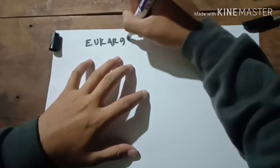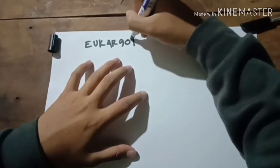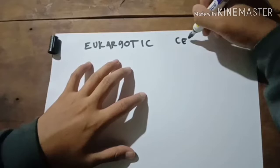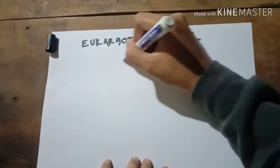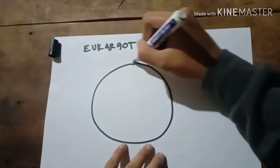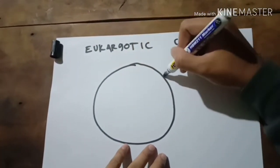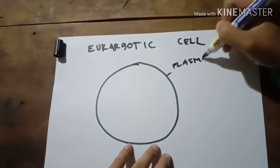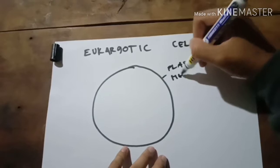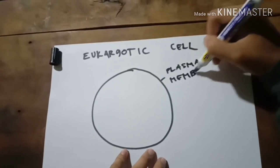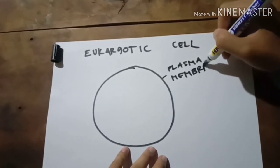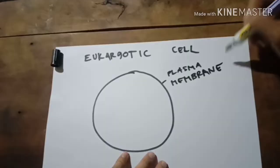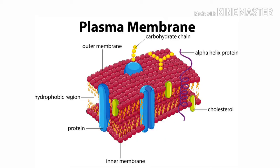The eukaryotic cell. This is the plasma membrane. The primary function of the plasma membrane is to protect the cell from its surroundings.